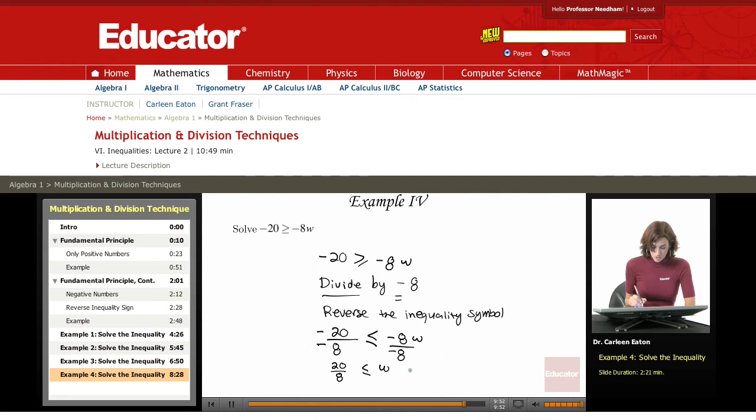And I could take that a step farther and simplify it a bit so that I get 5 halves is less than or equal to w.